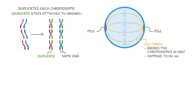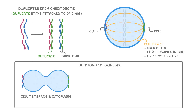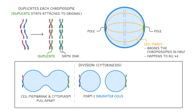Now that all of the genetic material has been divided among the two sides of the cell, the third and final stage takes place, which is division, or more properly called cytokinesis. For this stage, the cell membrane and cytoplasm pull apart, forming two daughter cells. Notice that half of the chromosomes have ended up in the left-hand cell, and the other half in the right-hand one. Therefore, each cell has the same DNA, and the two cells are identical to each other, and to the parent cell we started off with.